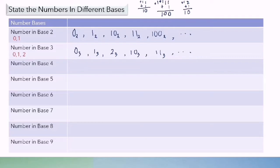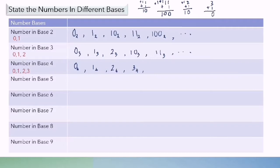For number in base 4, we have digits 0, 1, 2, and 3. If I write in sequence: 0 base 4, 1 base 4, 2 base 4, 3 base 4. And 3 plus 1 equals 4, but I don't have number 4 in base 4, so it becomes 0 and we add 1 to the front. So we have 1, 0 base 4, and so on.